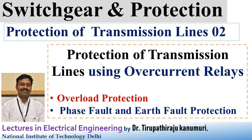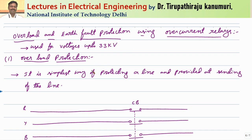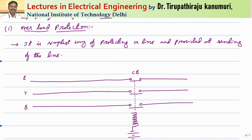Today we are going to discuss overload and earth fault protection of transmission lines using overcurrent relays. We will see the basics — these relays are generally used for voltages up to 33 kV as primary protection systems and as backup systems for high voltage transmission lines. We are going to discuss the overcurrent relay and its basic working principle for different types of transmission line applications.